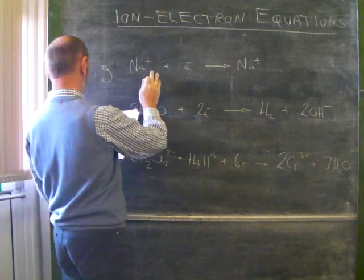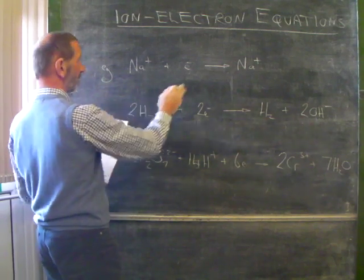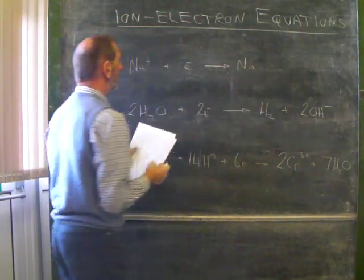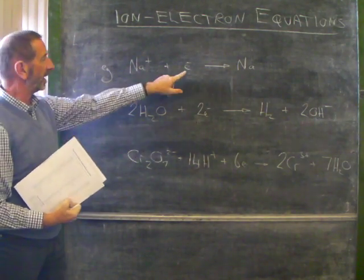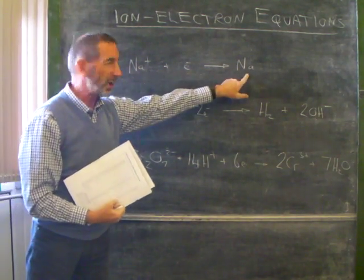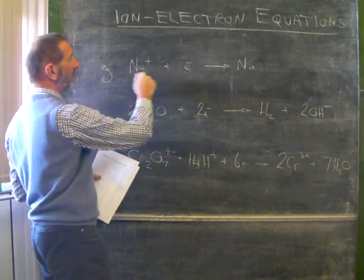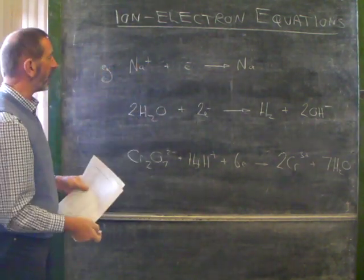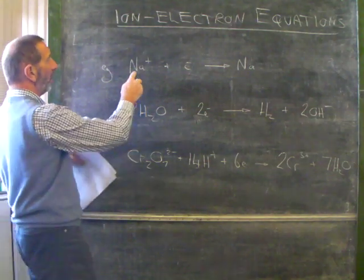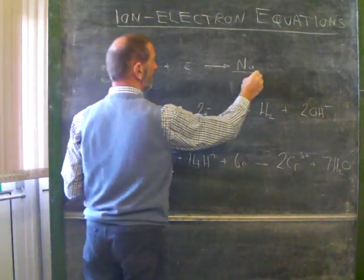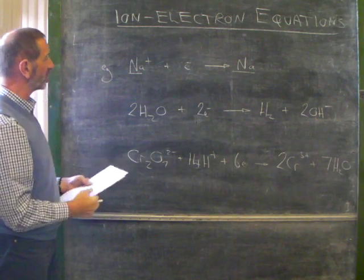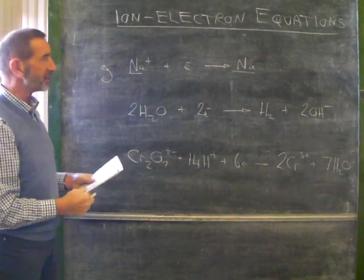Look at the first one here. Here is sodium, sodium ions, gaining electrons to form sodium atoms. Ion-electron equation. This is balanced. Of course it's balanced. It has to be balanced. We've got one sodium on each side, but more than that, it's not just the sodium which is balanced, the charge is balanced.